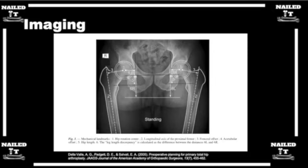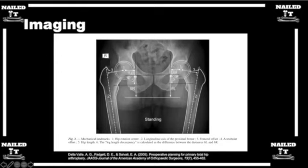One thing I forgot to mention in the history and physical: I always ask patients if they have any perceived leg length discrepancy. On the long leg alignment film, I always measure for actual discrepancy. If they have a perceived leg length discrepancy, I have different wood blocks in 5-millimeter increments from 5 millimeters up to 2.5 centimeters to figure out exactly how long they feel.